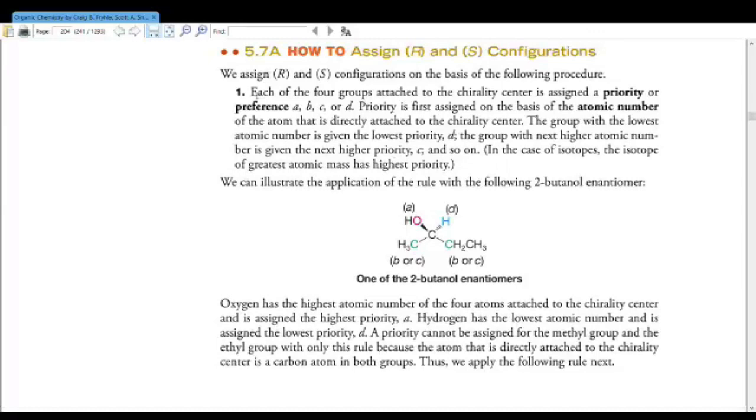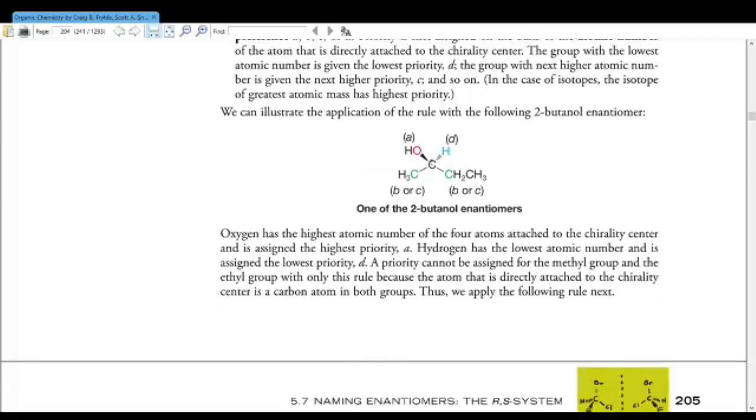Each of the four groups attached to a chirality center is assigned a priority or preference, A, B, C, or D. Priority is first assigned on the basis of the atomic number of the atom that is directly attached to the chirality center. The group with the lowest atomic number is given the priority D. The group with the next higher atomic number is given the next priority C, and so on. We see this with 2-butanol here. We've got oxygen which has the highest, hydrogen which has the lowest, so there's our A and our D, but we can't assign these two groups, our methyl and ethyl group, a B or a C priority based on just these rules alone.